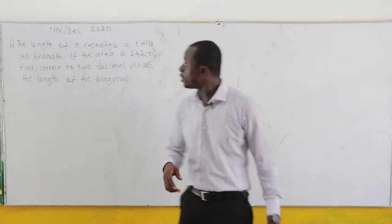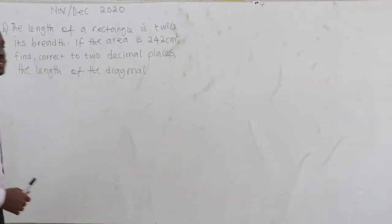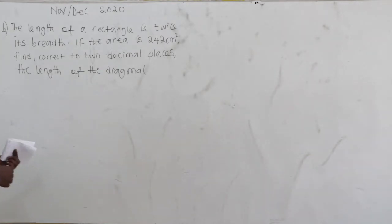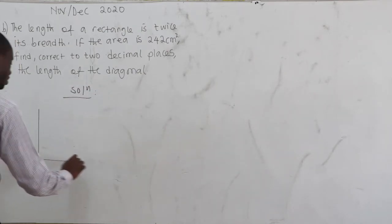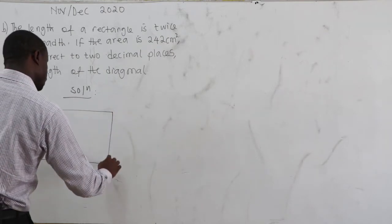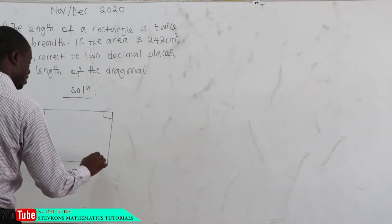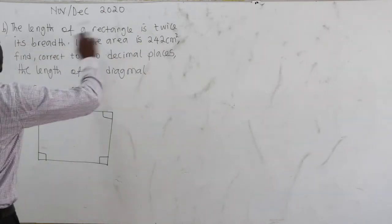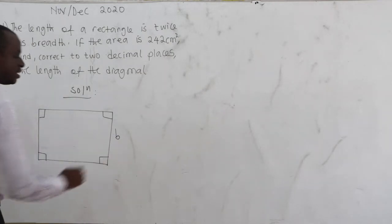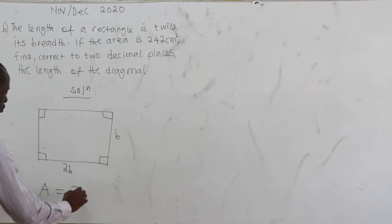November 2020, Question number 8b. The length of a rectangle is twice its breadth. If the area is 242 centimetres squared, find correct to two decimal places the length of the diagonal. Let's sketch a rectangle — all angles are 90 degrees. We are told the length is twice the breadth, so if the breadth is b, then the length would be 2b.